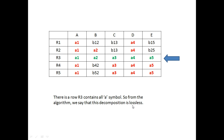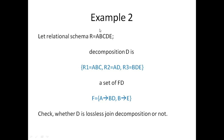Now I describe Example 2. Let relation schema R = (A, B, C, D, E). Decompose into R1 = ABC, R2 = AD, and R3 = BDE. The functional dependencies given are: A→BD and AB→E. Check whether the decomposition is lossless or not.